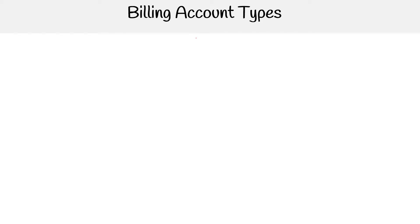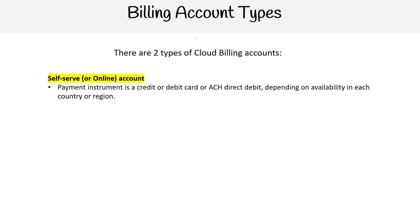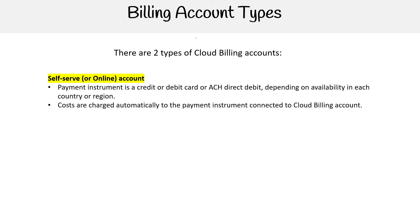Hey, this is Andrew Brown from ExamPro and we are looking at billing account types. There are two types of cloud billing accounts. We got self-serve or online accounts — the payment instrument is a credit or debit card or ACH direct debit, depending on availability in each country or region. Costs are charged automatically to the payment instrument connected to the cloud billing account, and you can sign up for self-serve accounts online.